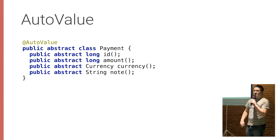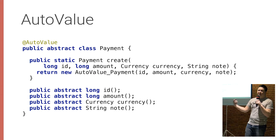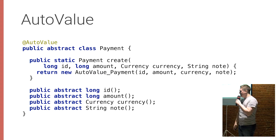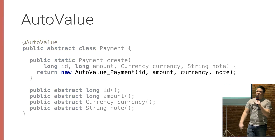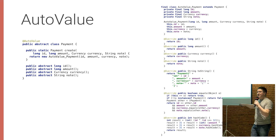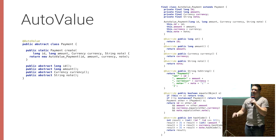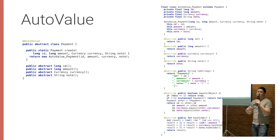The way that AutoValue works is that it generates a class on the side. In the types that we write, you provide a static method which calls into this AutoValue underscore payment class. This is generated automatically based on the annotation on top, and we get all the boilerplate — the equals, toString, hashCode, and the private final immutable properties — exposed by the methods that we wrote.